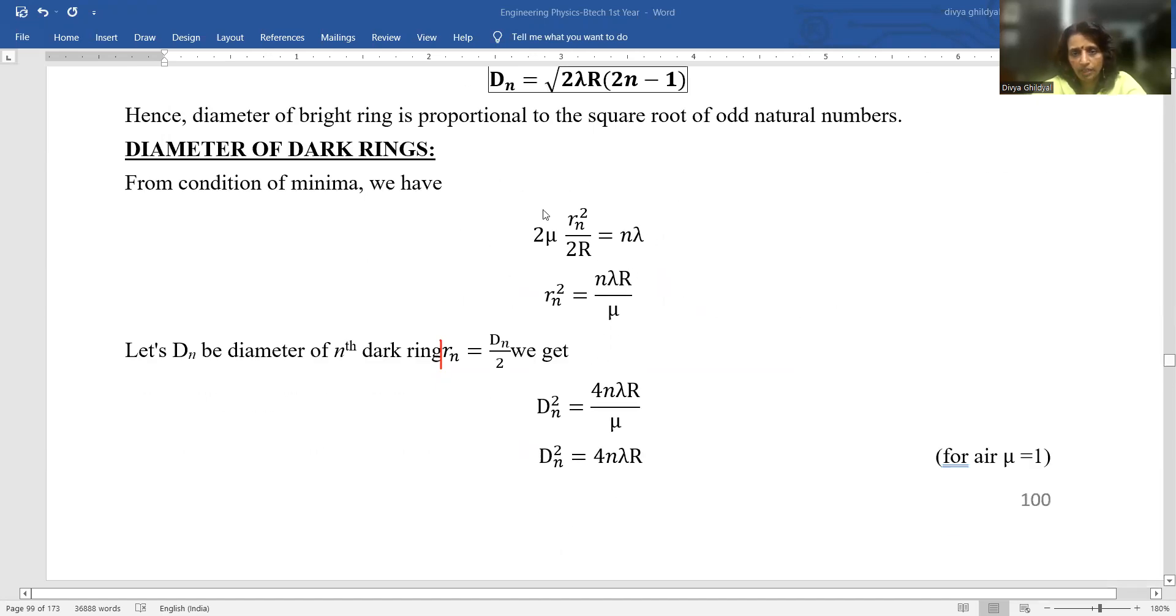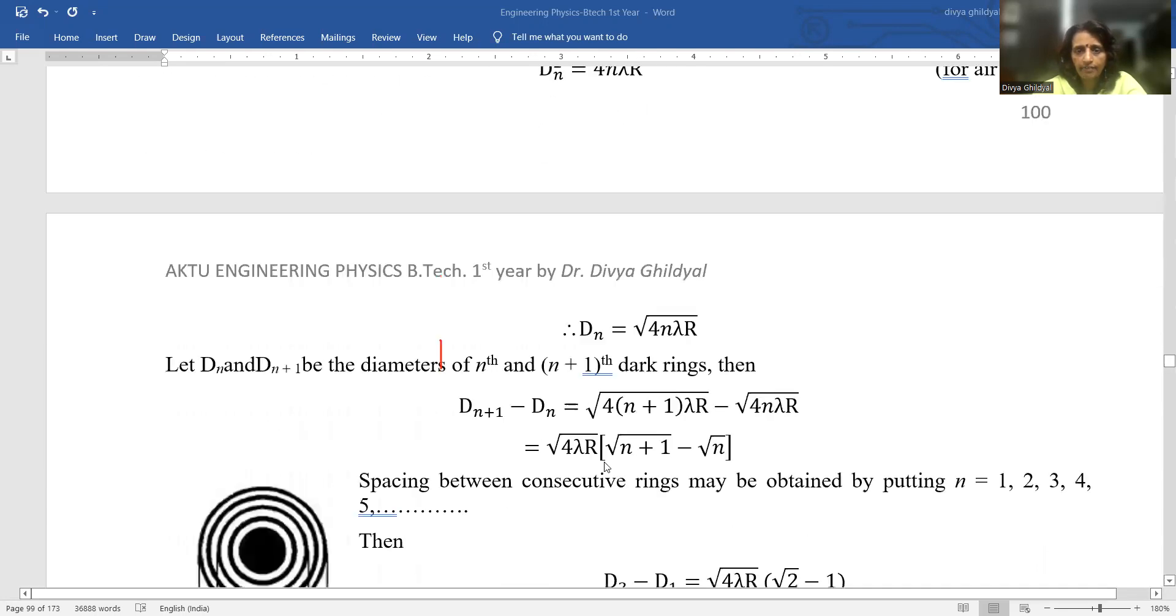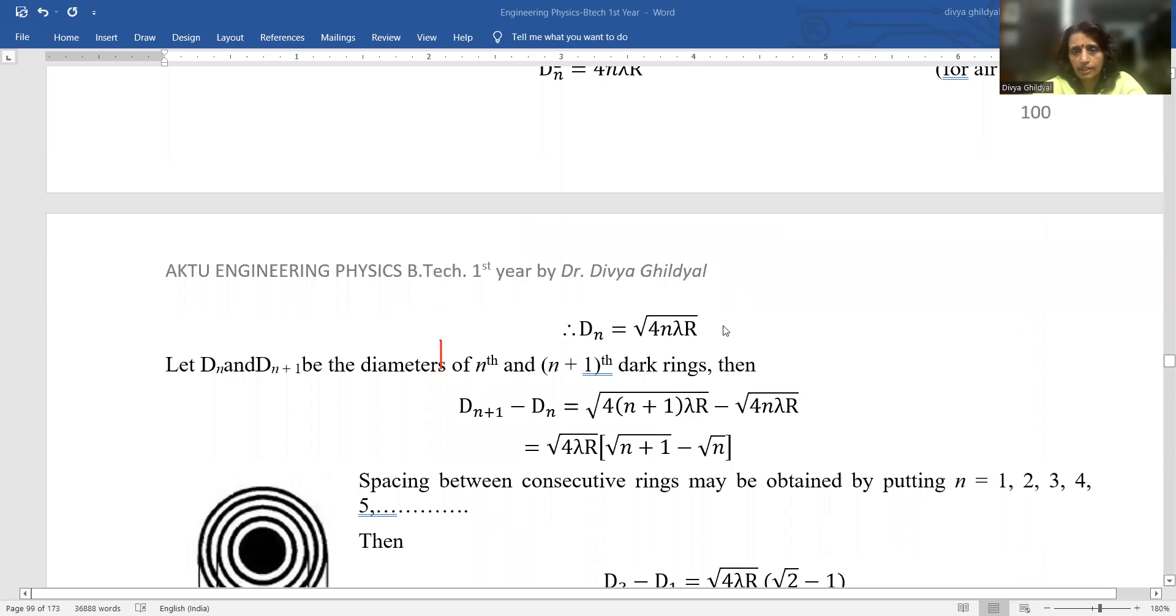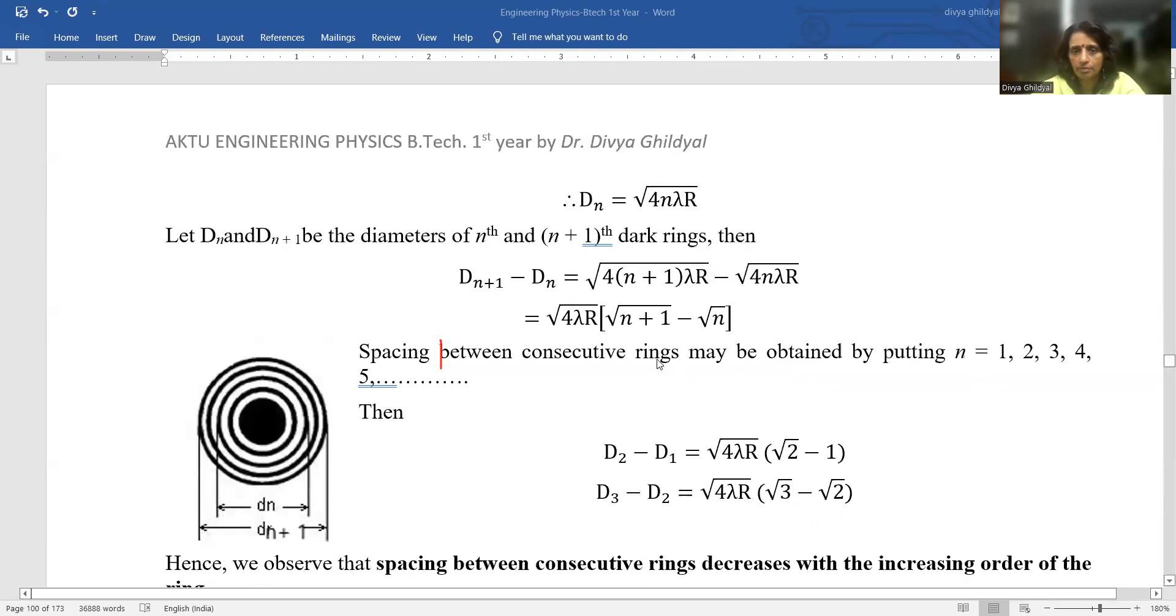Similarly for dark rings, I will take the condition of minima, I will put the value of RN here as DN/2 and I will get the diameter for the minima. The Nth and N+1th dark ring.